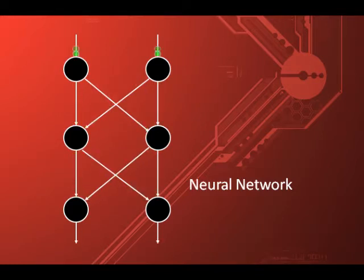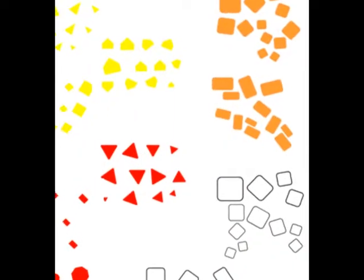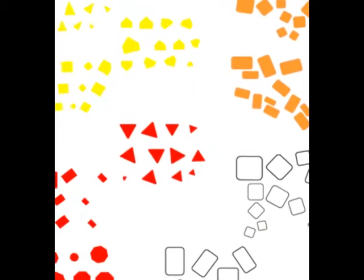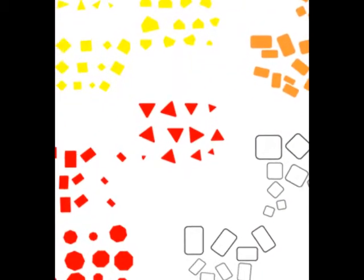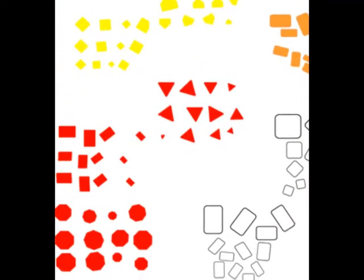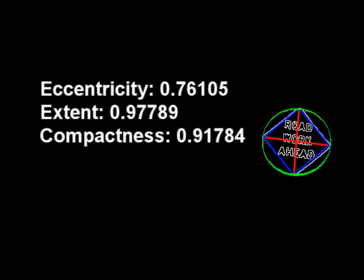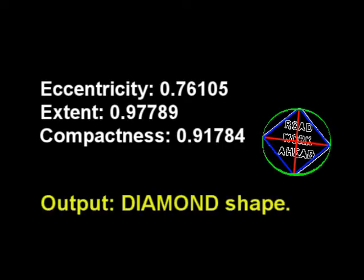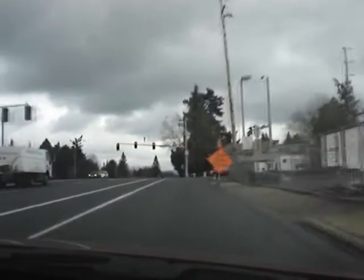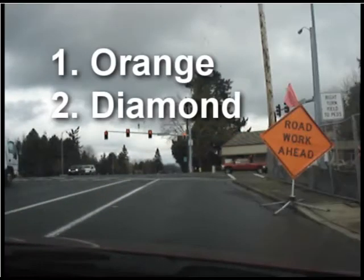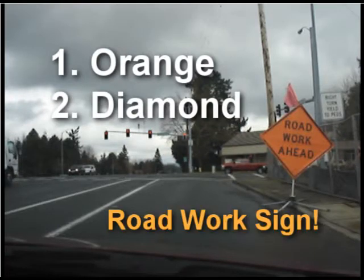Through trial and error with sample images during the initialization stage, the neural network will then learn the relationship between the shape features and the sign classification itself. Now we know that the sign is orange and diamond shaped, the software can then conclude a road work sign is ahead.